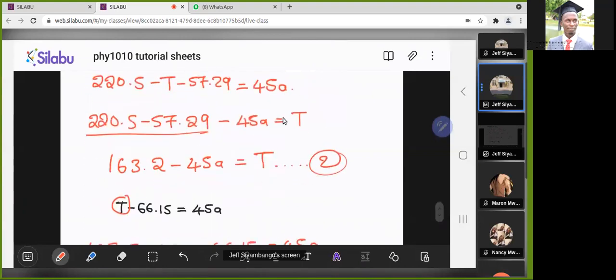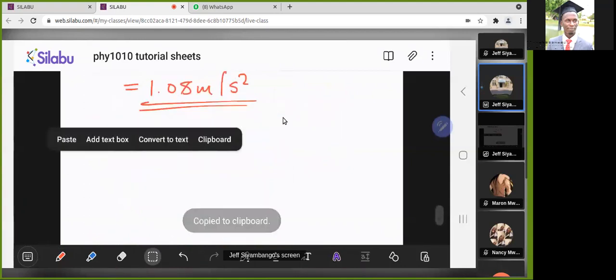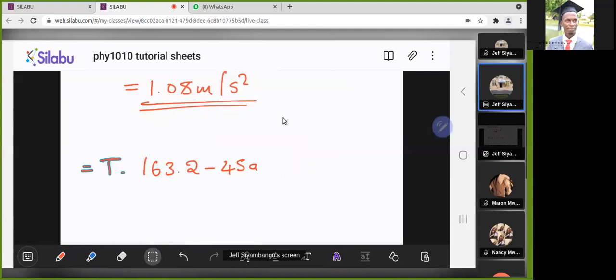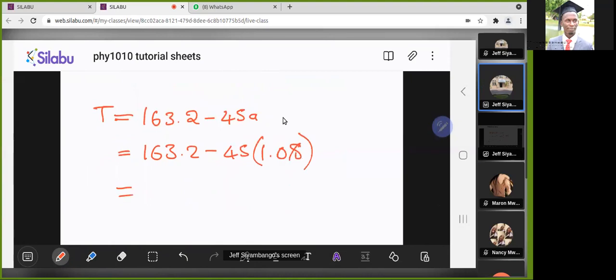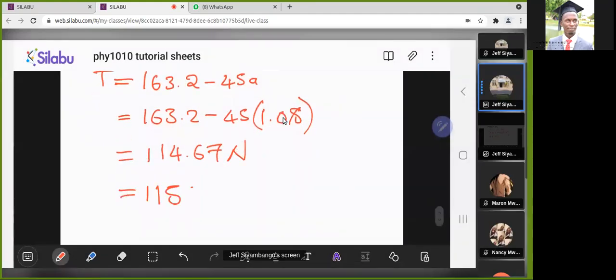If you know this, you can come back to equation two. Where there is acceleration, you can plug in the expression for acceleration. We get 163.2 minus 45 times 1.08. We can use the full value from the calculator. That's 163.2 minus 45 by our answer. And we get 114.67 newtons, or we can say this is 115 newtons.